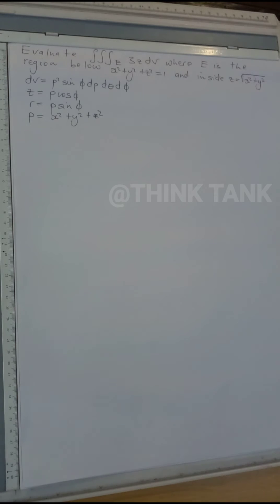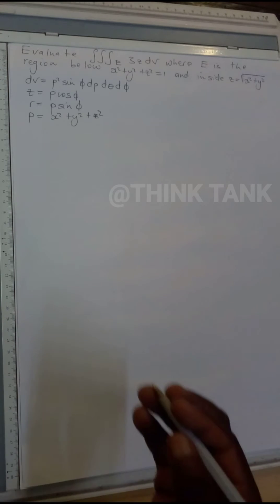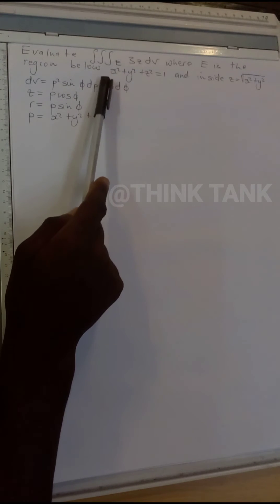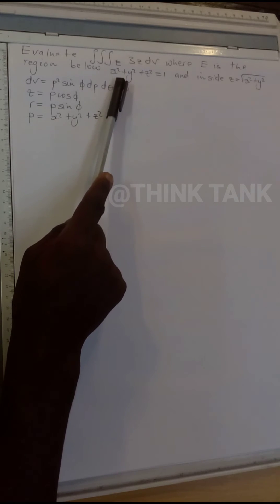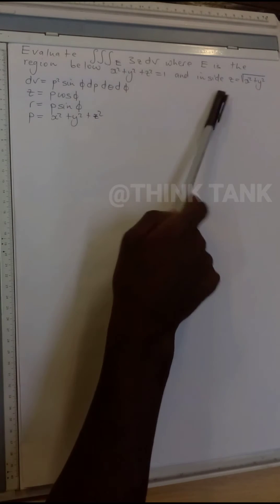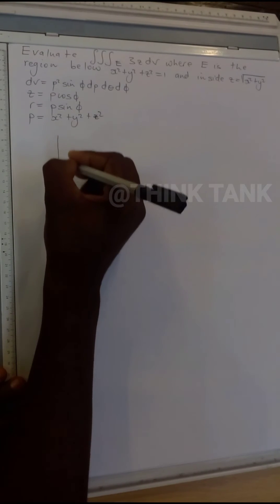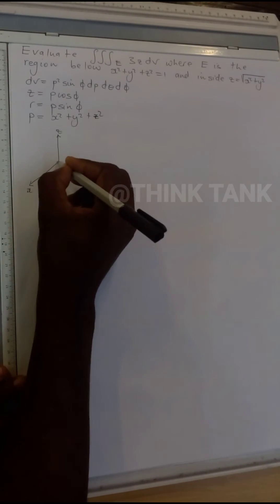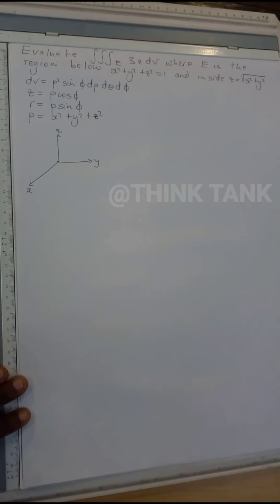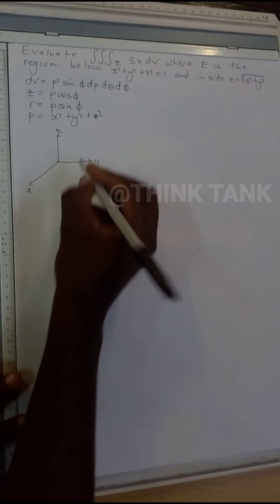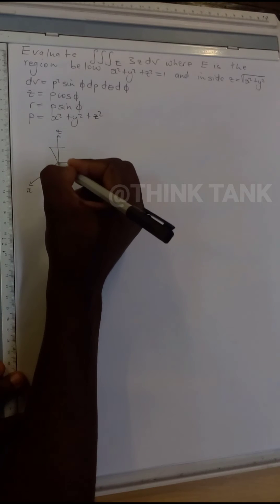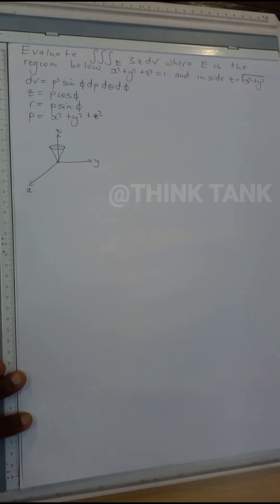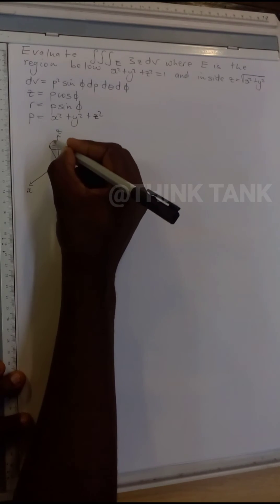The first thing you have to do when given a problem like this is visualize the information. So I have to graph this equation, which is a sphere, and this sphere is inside a cone. If I graph it, it looks like this — here is the z-axis, this is the x-axis, and this is the y-axis. And our cone looks like this.